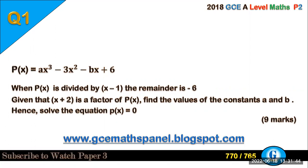So the first question here reads: P(x) equals x cubed minus 3x squared minus bx plus 6. When P(x) is divided by (x - 1), the remainder is minus 6. Given that (x + 2) is a factor of P(x), find the values of the constants a and b. Hence solve the equation P(x) = 0.